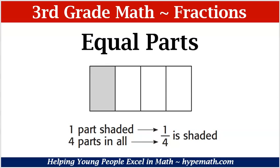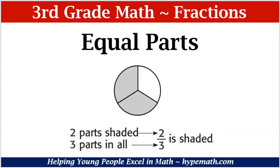Let's look at another example. We have a circle and if you notice, the circle is divided into three equal parts. We are looking for how many parts are shaded. We see that there are two parts shaded. So we put two in our numerator for the number of parts shaded, and in our denominator is the total amount of parts, which is three. Our fraction is two-thirds for the shaded parts.